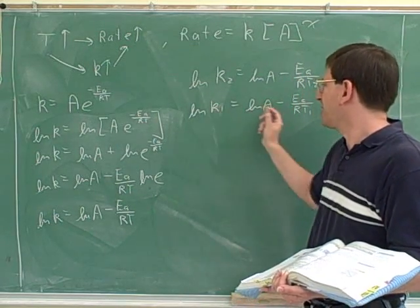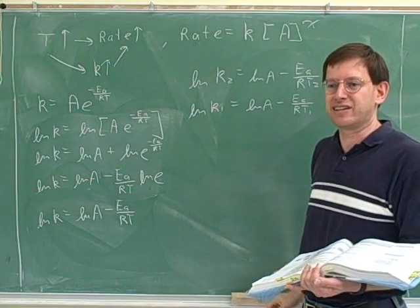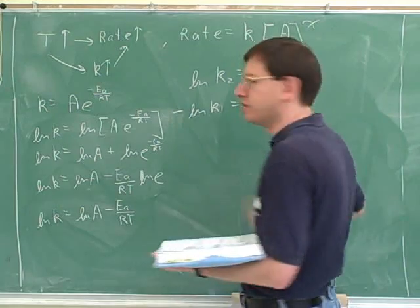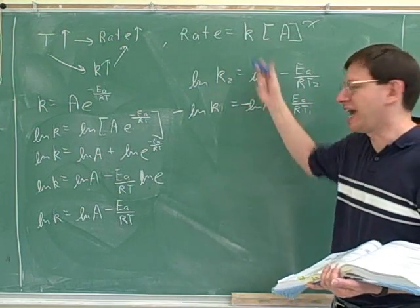Rather than subtracting, let's multiply this by negative 1 and then add. That's less confusing. So I'll multiply this by negative 1, which will turn it into this. And now let's add these together.